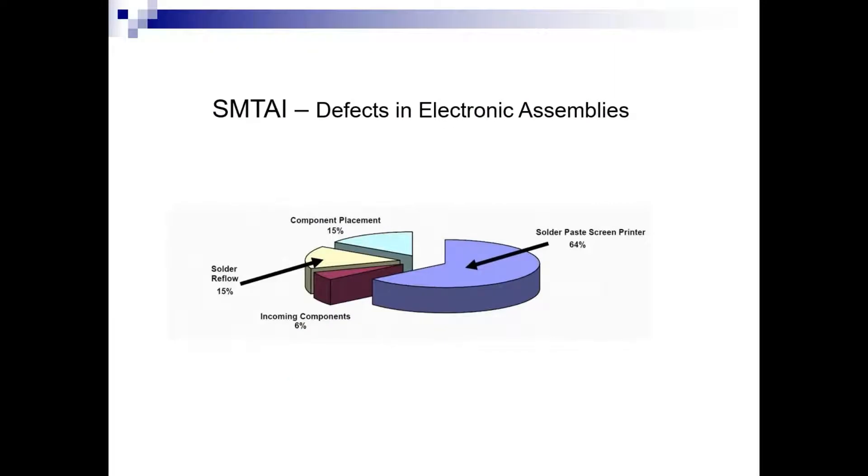Defects in electronic assemblies, according to SMTAI, are broken down into these particular areas. Obviously, the solder paste and the screen printer is one of those, and that tends to be about that 64%, 65% of defects show up there. The solder reflow is basically in that 15% range. It kind of shares with component placement. But the interesting thing is the solder paste is the thing that's really the same thing that we talk about in screen printing and reflow. It's the thing that really drives that.